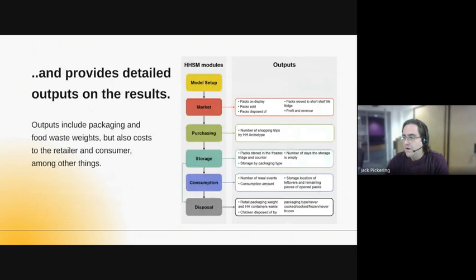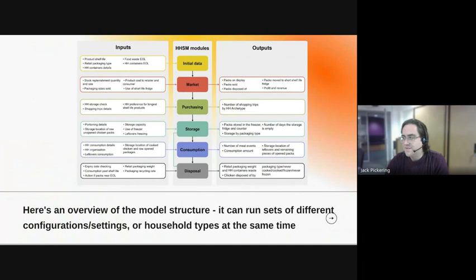On the output side, there is a wide range of outputs you can use to understand what's happening in the model and draw conclusions about the impact of changes. These outputs include the all-important food and packaging waste weights, as well as things like the number of meal events, number of shopping trips, and unfulfilled consumption. Here's the full diagram describing how the different parts of the model fit together with inputs and outputs — you can see how some of these are related to each other quite directly, and what goes into this flow.